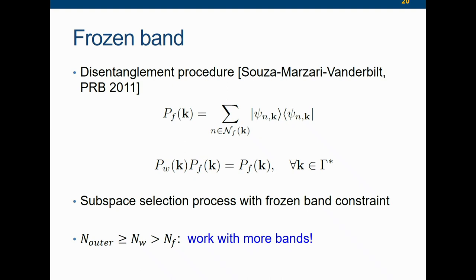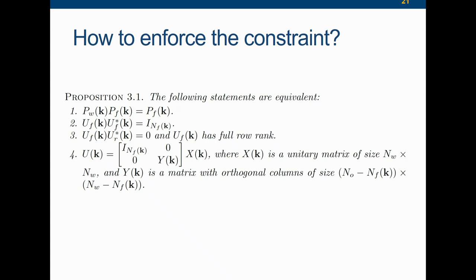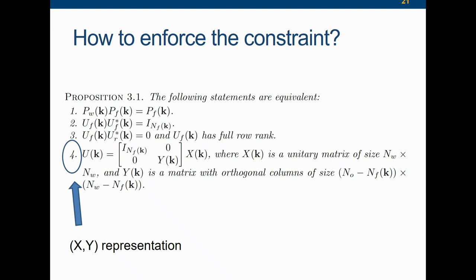It is actually better viewed as an incomplete minimization problem towards minimizing something — and it doesn't mean it's not a good algorithm; it's still very good. To enforce the constraint, there are at least four mathematically equivalent ways. The numerically most convenient one is the so-called XY representation: the gauge U_k is given by a matrix with an identity block reflecting the frozen band, a Y_k gauge in block-diagonal form where Y_k is unitary, multiplied by another unitary matrix X_k. This part corresponds to the gauge-invariant part, and this part to the gauge-dependent part.